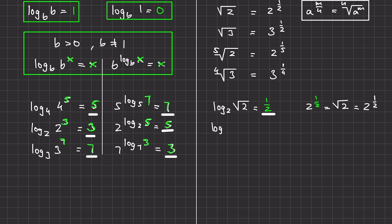What is log base 3 of the square root of 3? Again, 3 raised to what power equals the square root of 3? The square root of 3 equals 3 raised to the power of 1/2. So log base 3 of the square root of 3 equals 1/2.